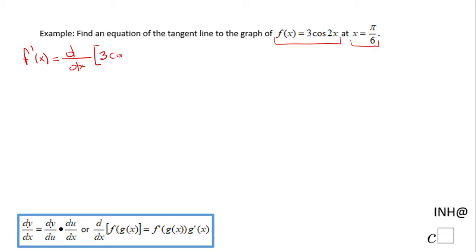The first thing I can do here is to use the constant multiple rule and pull the 3 out, and then I have 3 times the derivative of cos(2x).